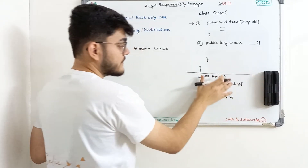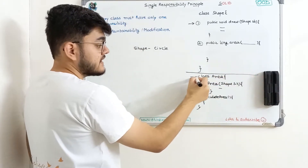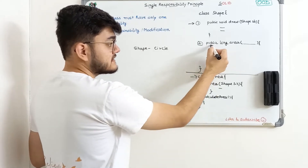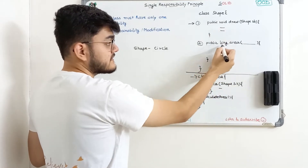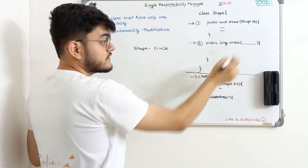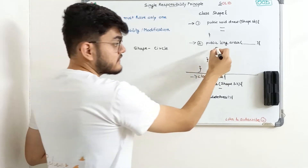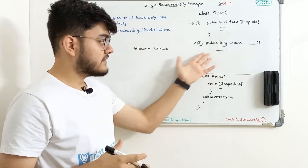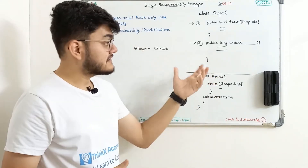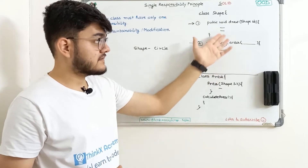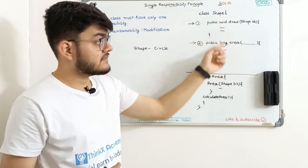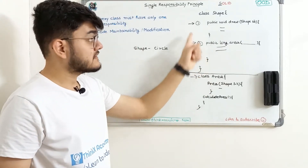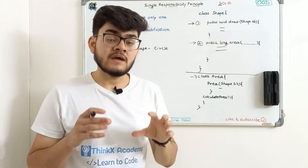Just consider this part of the program for now. The class Shape also has a public long area function, which is an algorithm to calculate the area of a circle. We were initially sure we would have only one feature. But as you can see, this simple class is actually violating our principle.